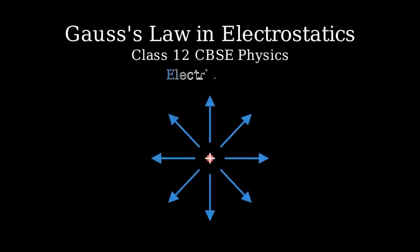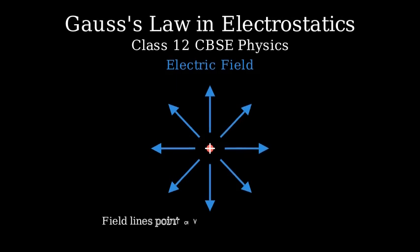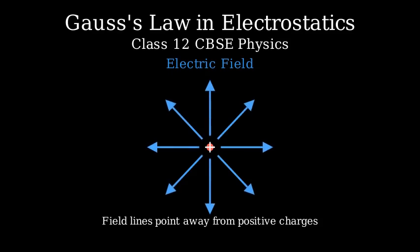Before we dive into Gauss's Law, let's quickly review what an electric field is. An electric field is a region around a charged object where other charged objects experience a force. We often represent electric fields using field lines — arrows that show the direction a positive test charge would move if placed in that field. These lines start from positive charges and end at negative charges.